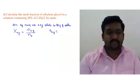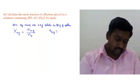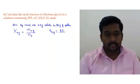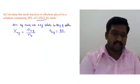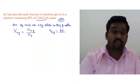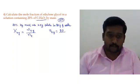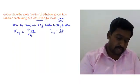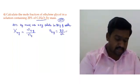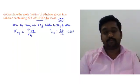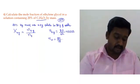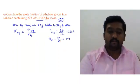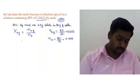Number of moles of ethylene glycol = given mass / molecular mass = 20 / 62. The molecular mass of C₂H₆O₂ is 62: 2 carbons = 24, hydrogen = 6, oxygen = 32, totalling 62. So 20/62 = 0.322. Similarly, moles of water = 80/18 = 4.444.